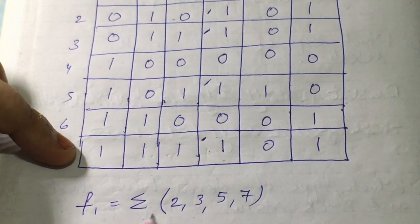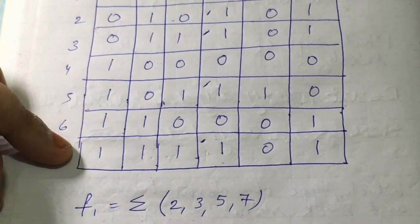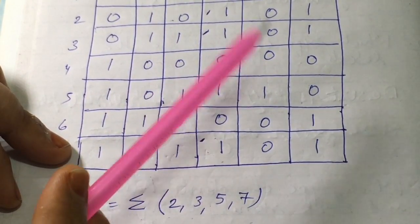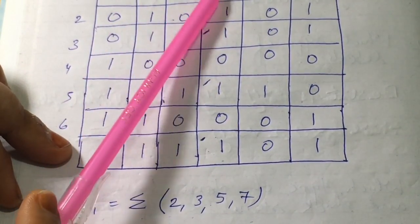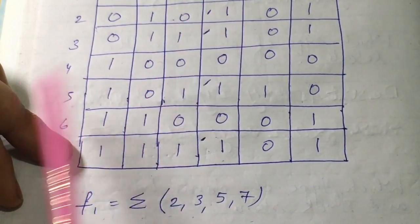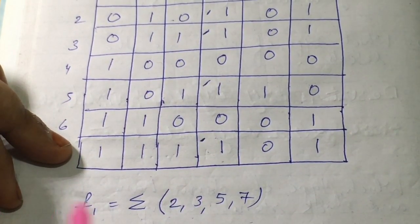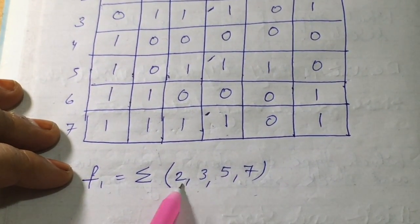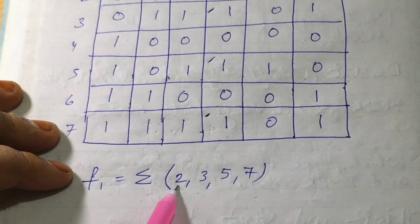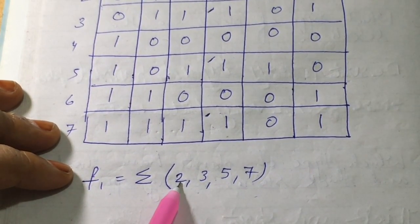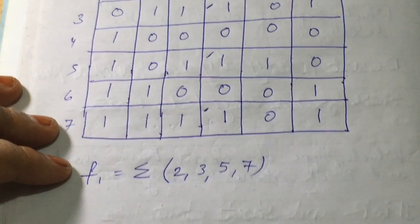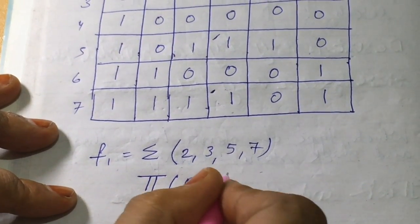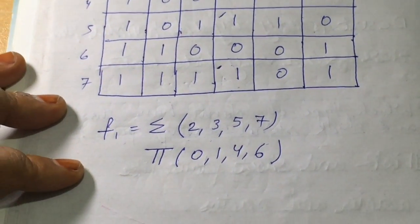If asked to write f1 in product of sum form, look at the rows where f1 = 0. The missing rows (those not in {2,3,5,7}) are 0, 1, 4, and 6. So f1 = Π(0, 1, 4, 6). You can directly identify these as the rows not having value 1.